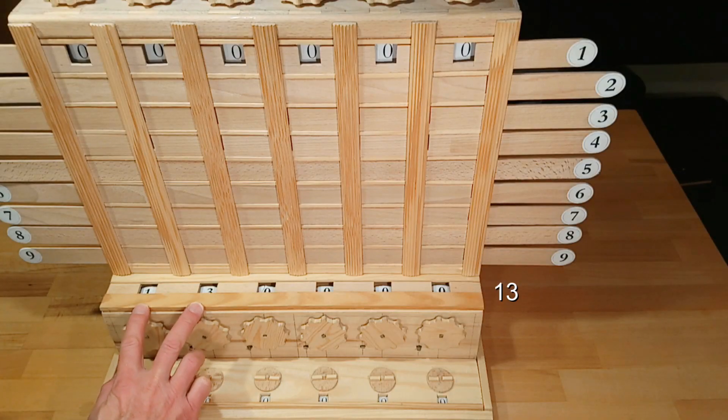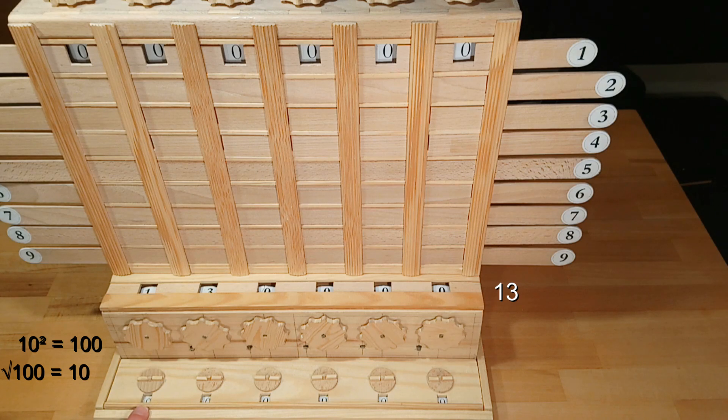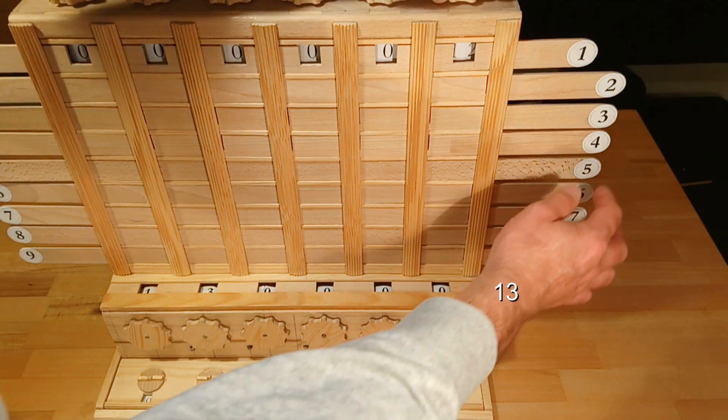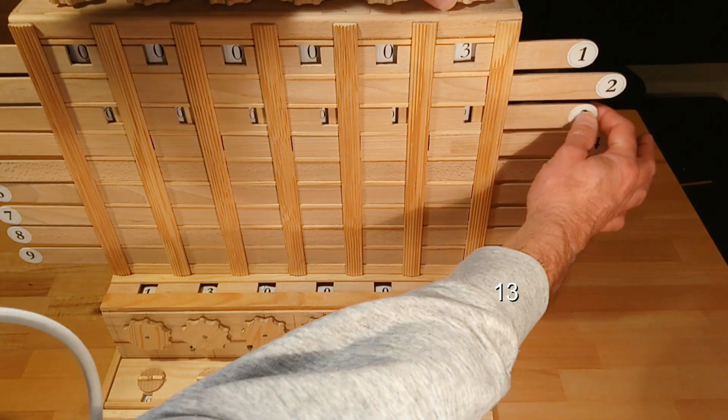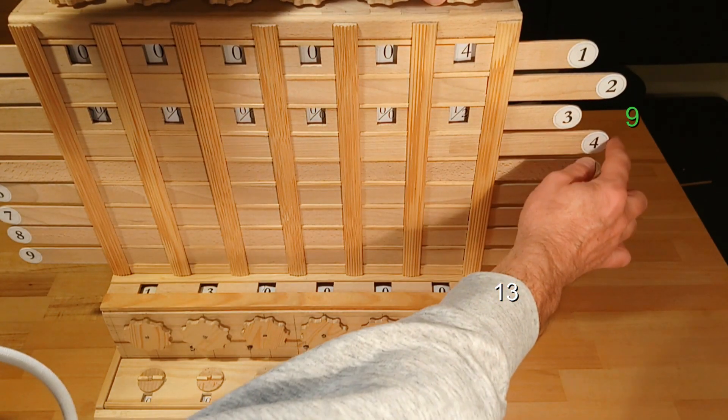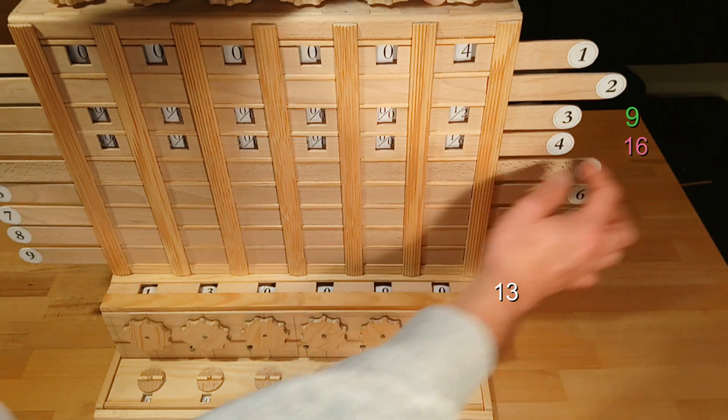When calculating square roots, two digits in the adder always correspond to only one result digit because 10 squared is 100 and the root of 100 is 10. First we are looking for the square number that is less or equal 13. 3 times 3 is 9 which is less than 13 and 4 times 4 is 16 which is too large. Therefore 3 is the first result digit.